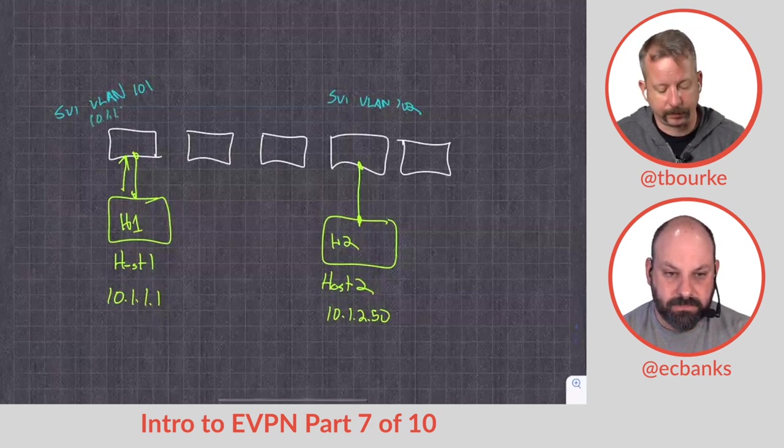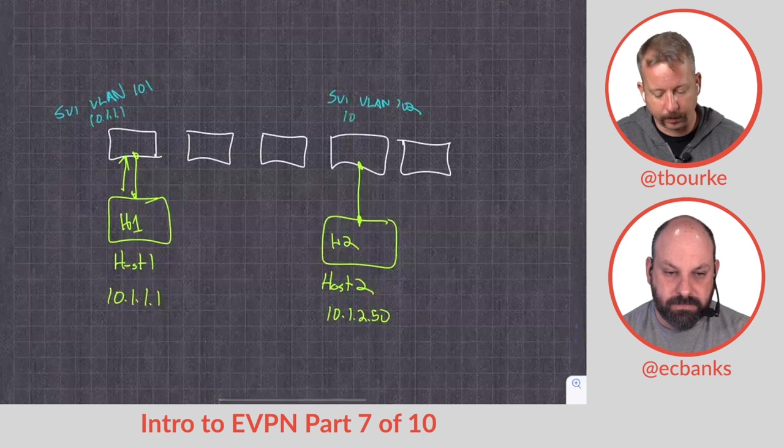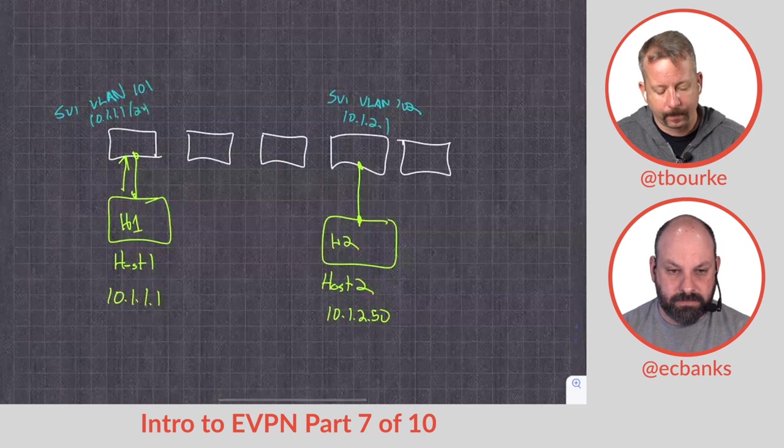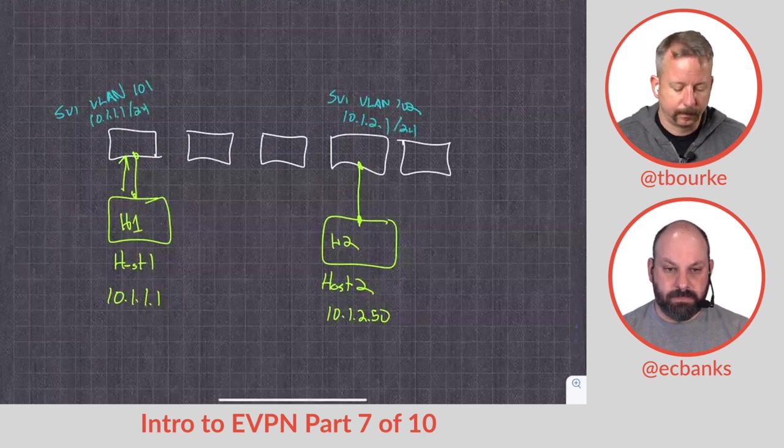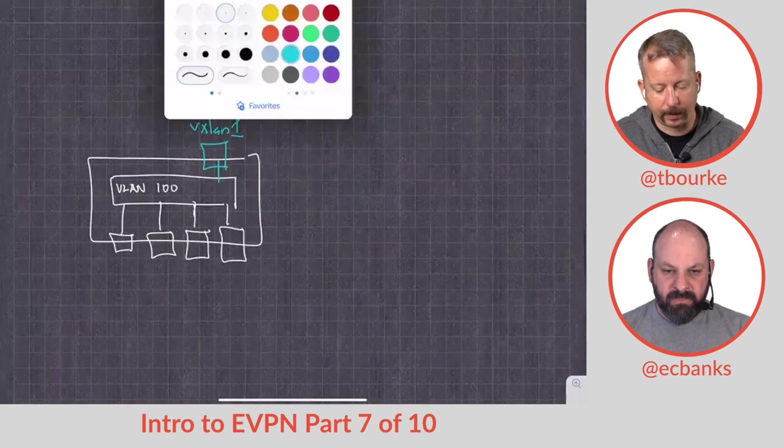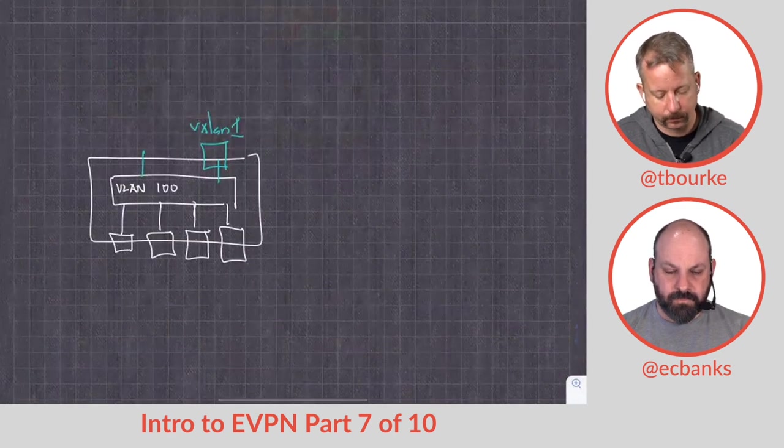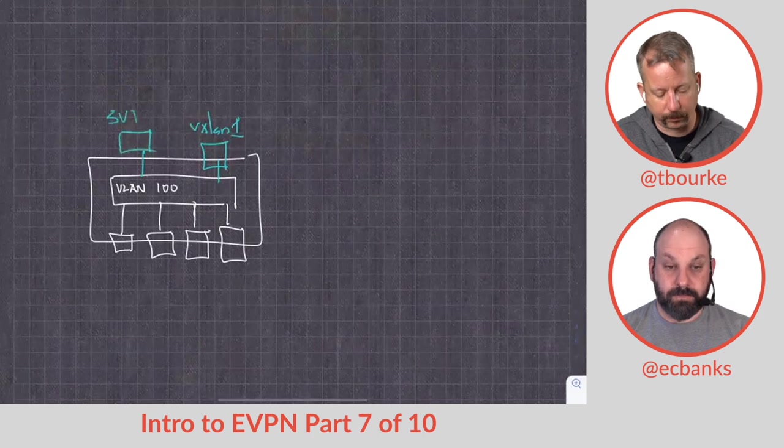So the anycast address here will be 10.1.1.1. The anycast address here will be 10.1.2.1. And these are going to act as my default gateways. So my layer two segment now has an SVI locally.